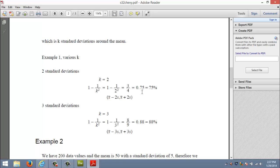3/4 is 0.75 or 75%. So Chebyshev's theorem says if I go within two standard deviations of a particular set of data, 75% of all the numbers should live in that interval.